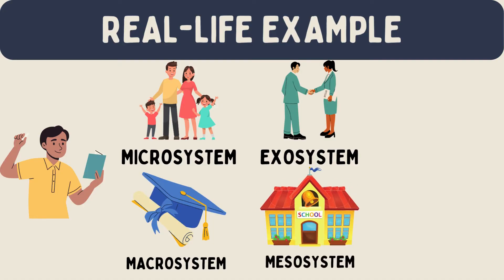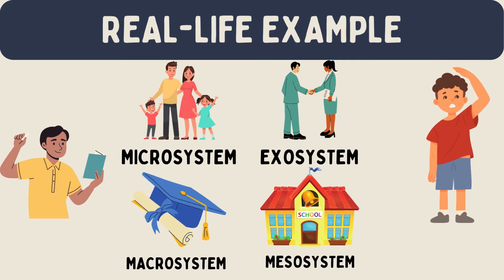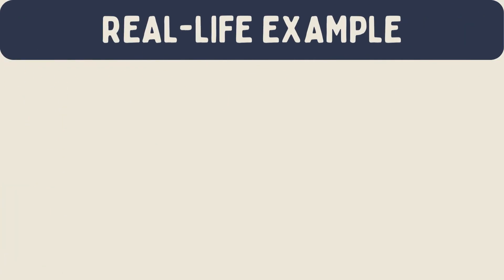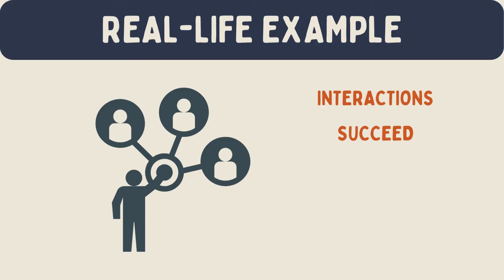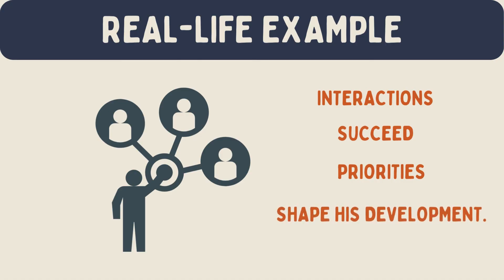Over time, Alex goes through different life stages and experiences changes — that's the chronosystem. Each part of Alex's life is connected. The stress his parents feel at work can affect their interactions with him. Their involvement in his school can help him succeed. The values of their culture shape their priorities. As Alex grows, the influence of these systems will continue to change and shape his development.